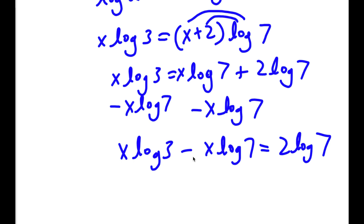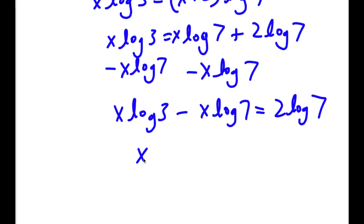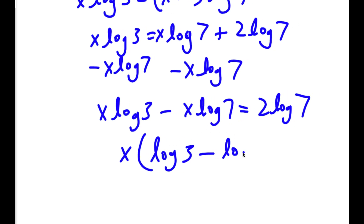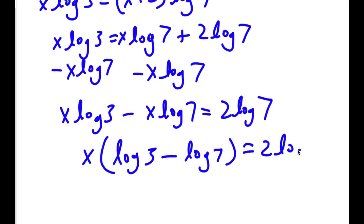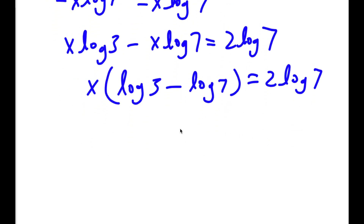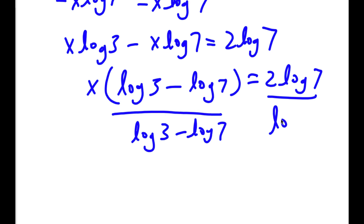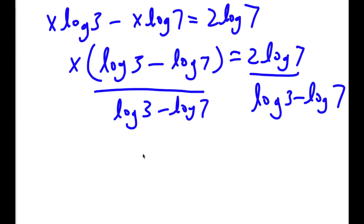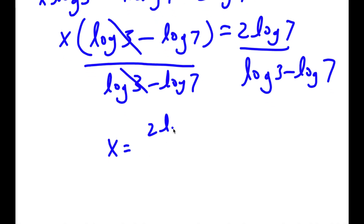From these two terms I can factor out x, since both terms have x in them. So I have x times log 3 minus log 7, and this is still equal to 2 times log 7. Now I want to isolate x, so I'll divide both sides by log 3 minus log 7. These cancel out, leaving x is equal to 2 times log 7 over log 3 minus log 7.